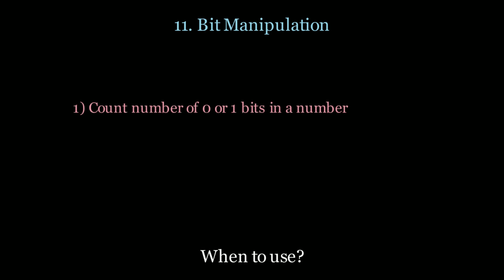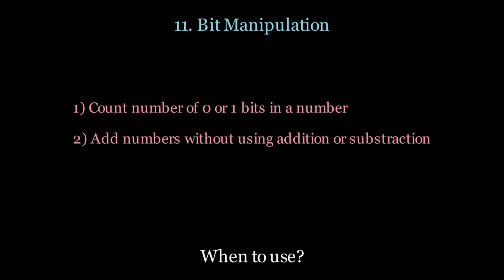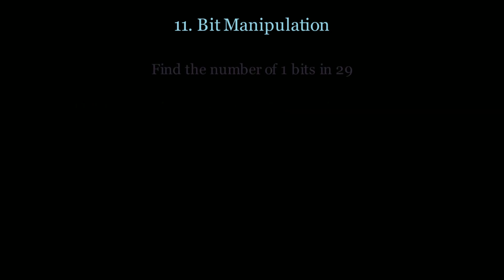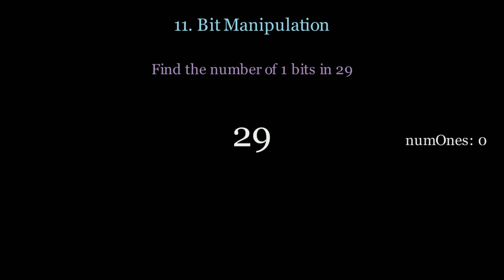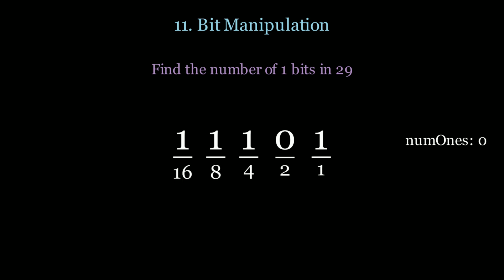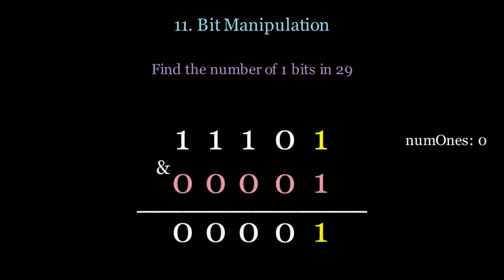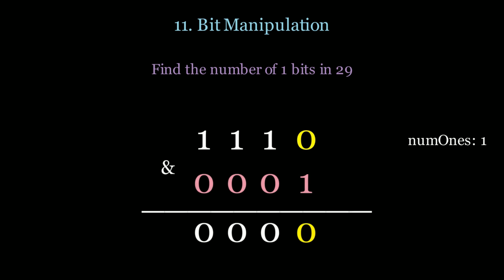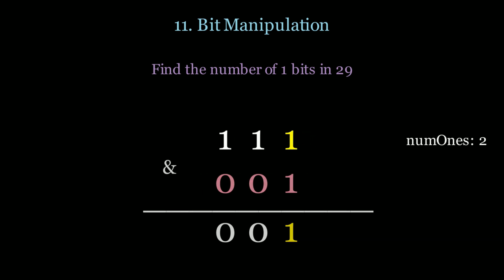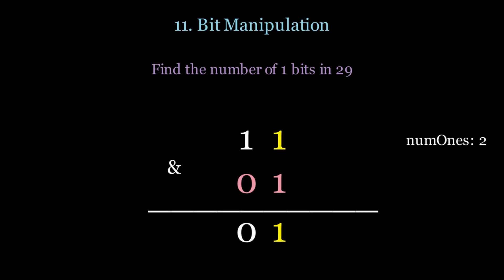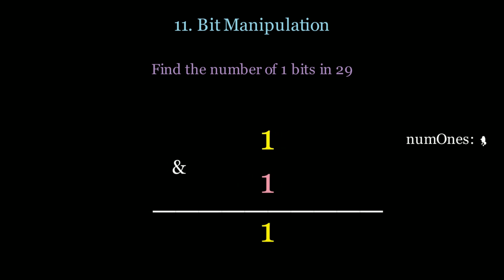Next up is bit manipulation. Use this when you want to count the number of 0 or 1 bits in a number, add two numbers without using addition or subtraction, or find the missing number in a list. To count 1-bits in 29, transform to binary, then AND the number with 1 to get the least significant bit — add it to the result if it's 1 — and then right-shift by 1. Repeat until the number is 0.